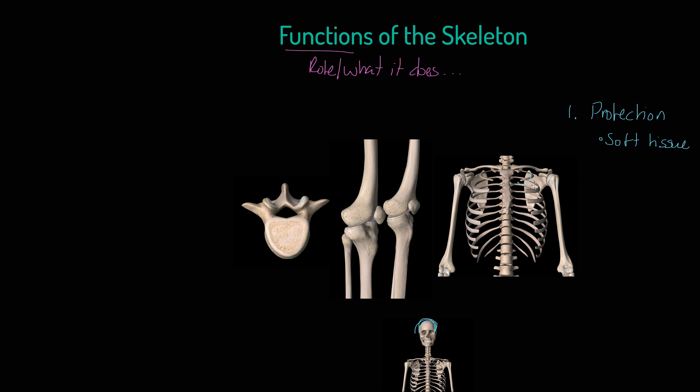But we've also got the ribs, the sternum, which protect the soft tissue, the heart and the lungs, and the thoracic cavity. We've even got this hollow, which I'm not going to name today because it's not on our course. But this within the vertebrae, a single backbone or vertebrae, multiple, this protects, of course, the spinal cord.